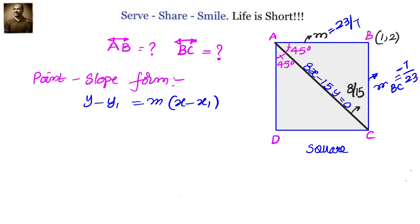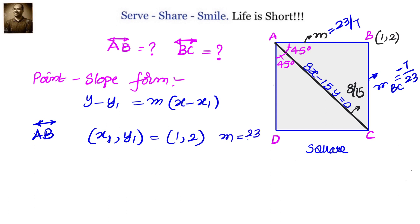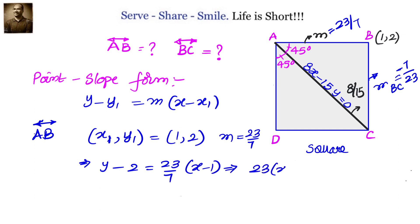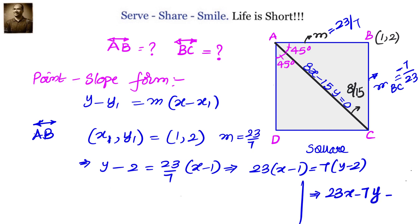Here (x1, y1) is (1, 2) and slope M is 23 by 7. Substituting into point-slope form to find equation of AB: y minus 2 equals (23/7)(x minus 1), which gives 23(x minus 1) equals 7(y minus 2), or 23x minus 23 equals 7y minus 14, simplifying to 23x minus 7y equals 9.